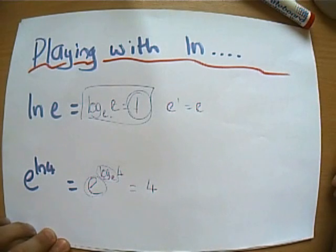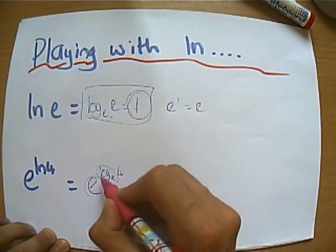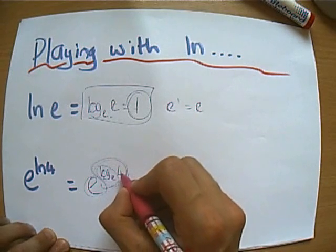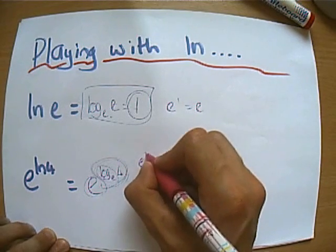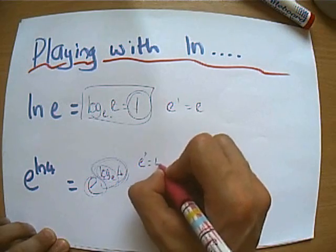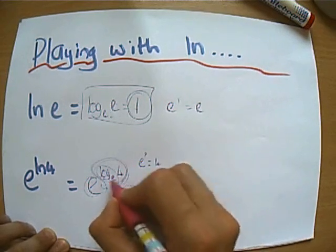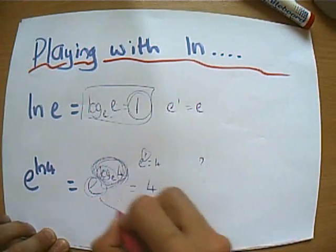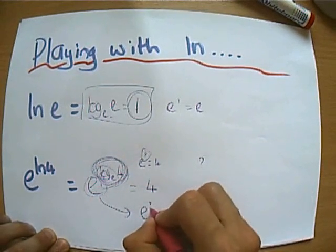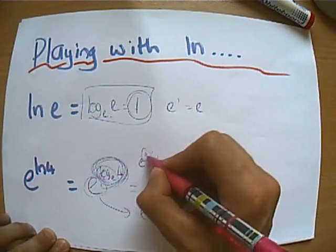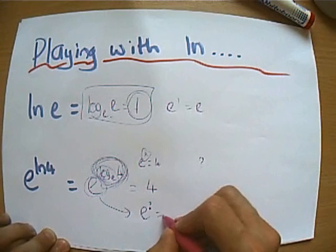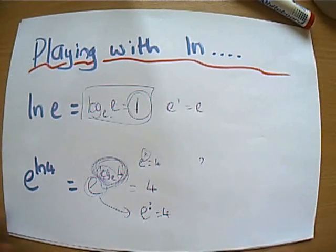So in fact, e to the ln cancels itself out in inverted commas, and therefore the answer to this is just 4. And again, let's unpick why that is. This is saying what power did I raise e by to get 4? So e to the something equals 4. So let's call this bit question mark.